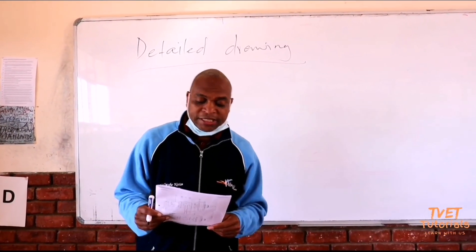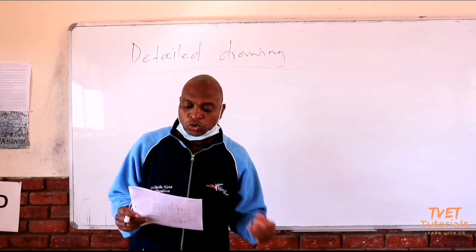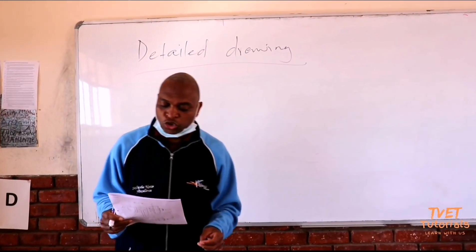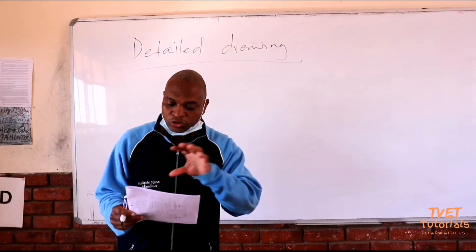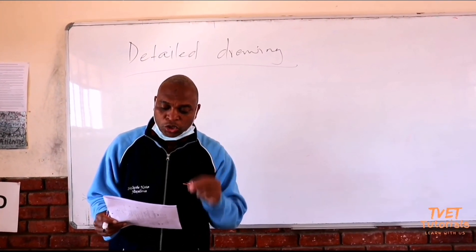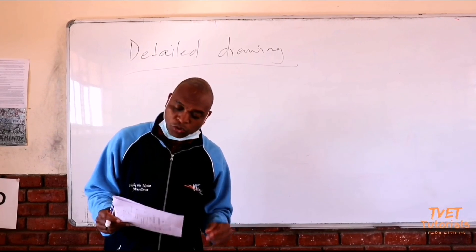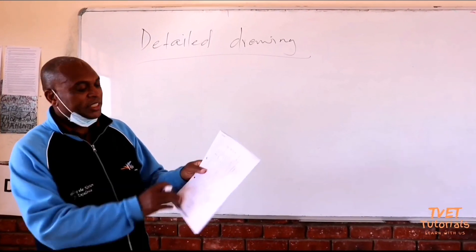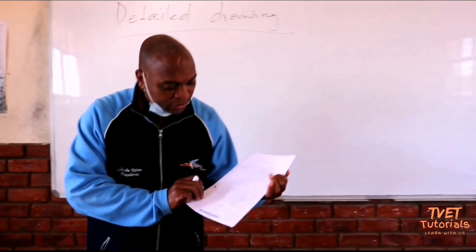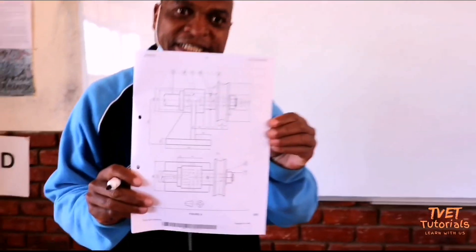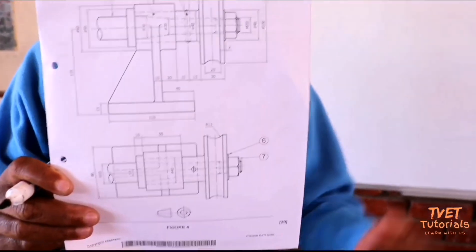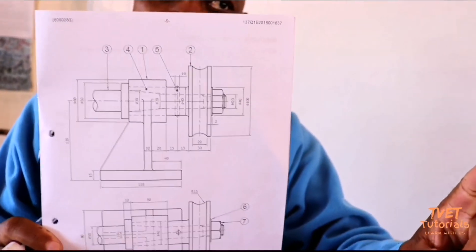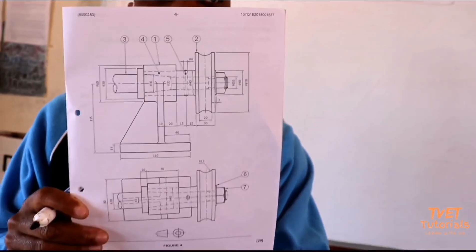We are also going to draw the pulley, which is item number two, showing a half sectional front view with the top half in section. These are the only two items we are going to concentrate on. This machine has seven components, but they don't need all of them — only item number one and item number two.